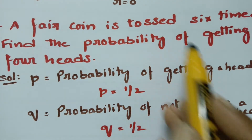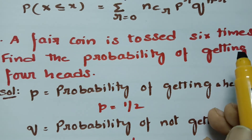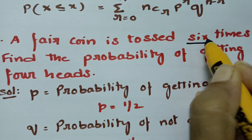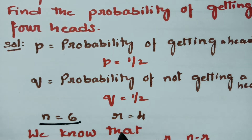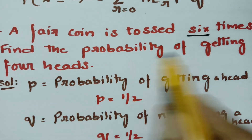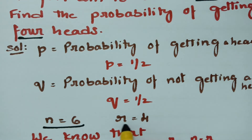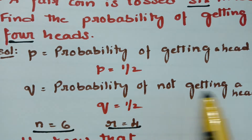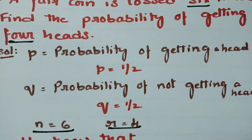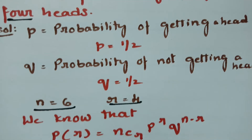A fair coin is tossed 6 times, so n is given as 6. We need to find the probability of getting 4 heads, so r value is given as 4. The probability of getting a head is 1/2 and the probability of getting a tail is 1/2. So n = 6 and r = 4.